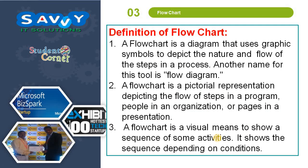Now we are going to flowcharts. Here also we are giving three definitions. A flowchart is a diagram that uses graphic symbols to depict the nature and the flow of the steps in a process — another name for this tool is flow diagram. Simply put, a pictorial representation of an algorithm is called a flowchart. A flowchart is a pictorial representation depicting the flow of steps in a program, people in an organization, or pages in a presentation. A flowchart is a visual means to show a sequence of activities and the sequence depending on conditions.